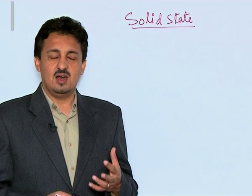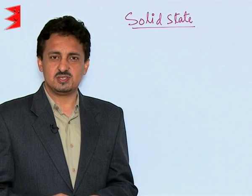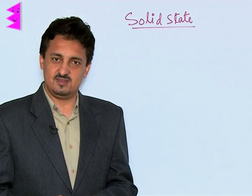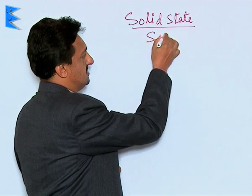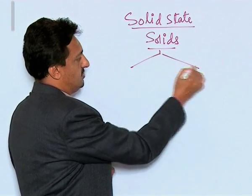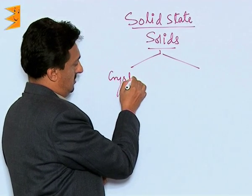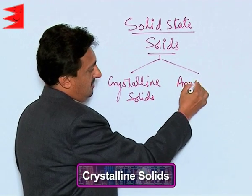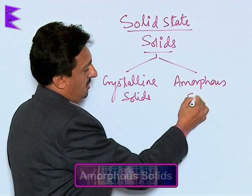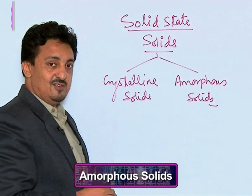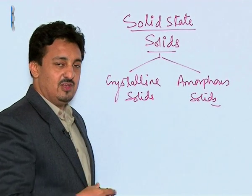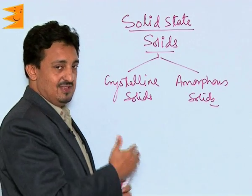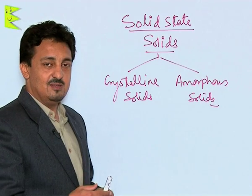These solids are classified into two major categories on the basis of the arrangement of the constituting particles they have. The solids are of two types: crystalline solids and amorphous solids. This classification is on the basis of the arrangement of the constituting particles. Let us now study each of these types separately so that we can understand the major differences between the two.